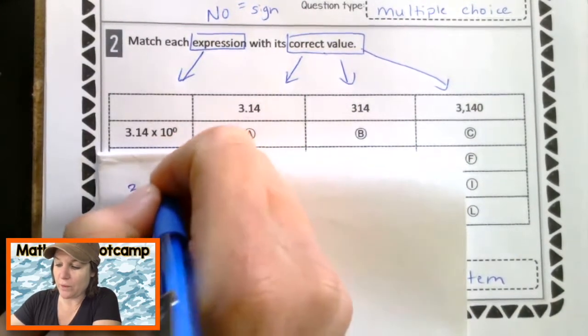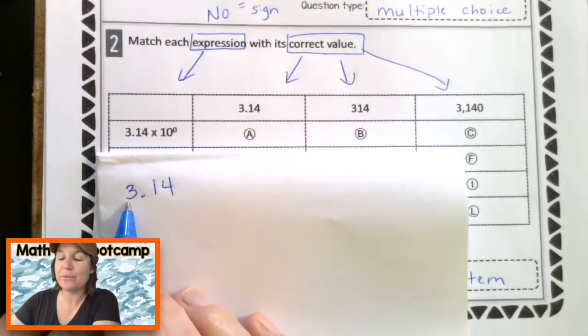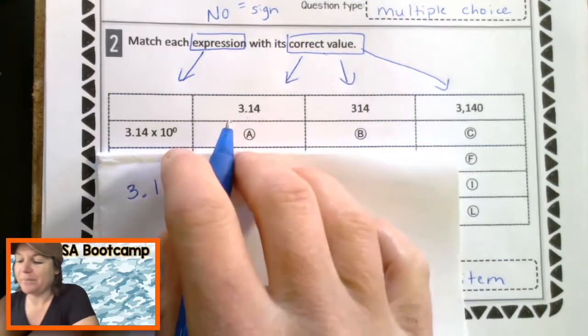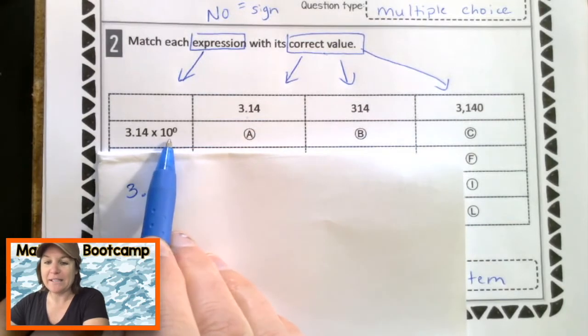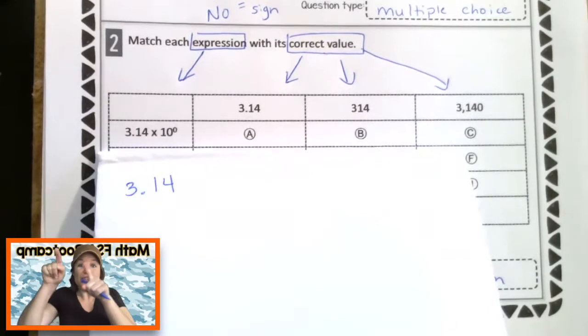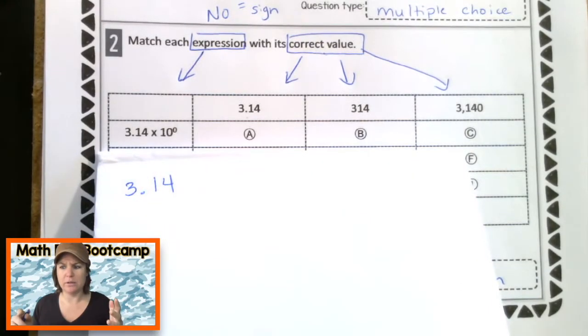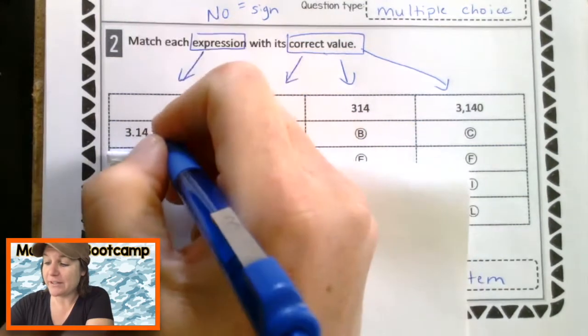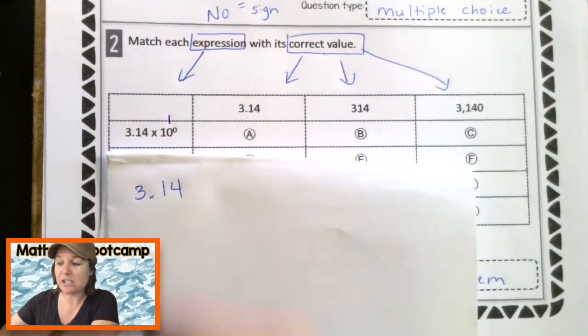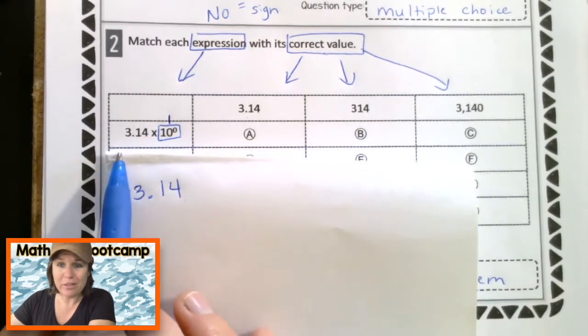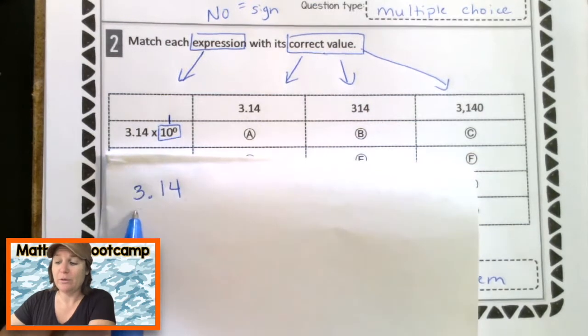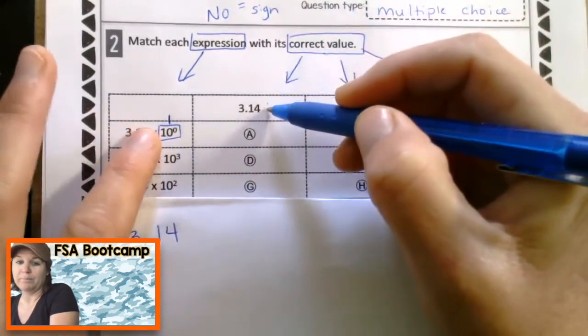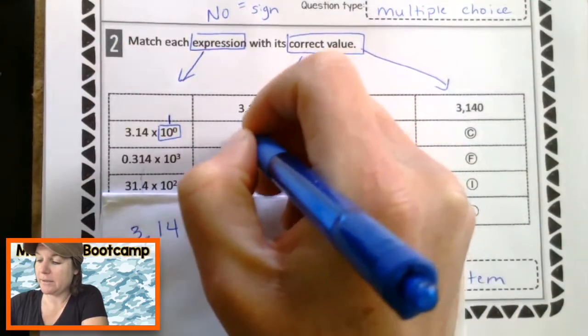So here we've got 3.14. We don't read it like that. We read it as 3 and 14 what? Hundredths, tenths, hundredths. Awesome. So we're multiplying it by 10 to the power of zero. That means that we're shifting it to the right zero times, which means that we're not moving it at all, which means that it's actually like we're multiplying by one. If we aren't moving our decimal and we're just keeping it the same, it's actually like multiplying it by one times. So really 3 and 14 hundredths times one would be 3 and 14 hundredths, which would be choice what? Yeah, it would be this one right here. And if we match them up, it would be right there. Choice A. Easy, easy, lemon, squeezy.